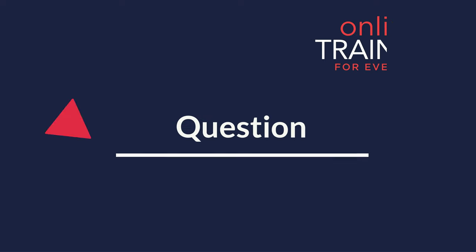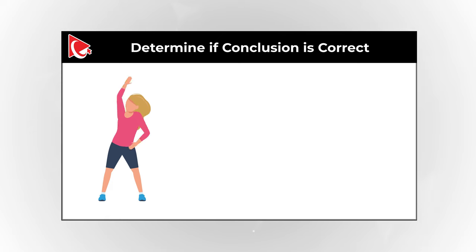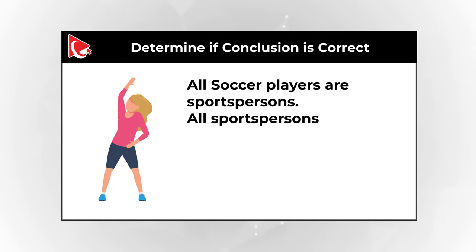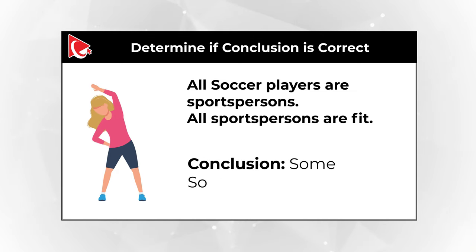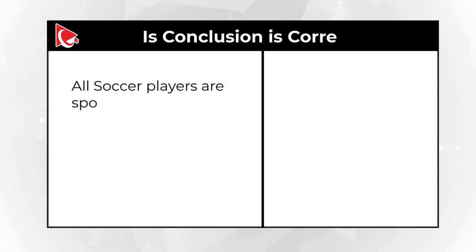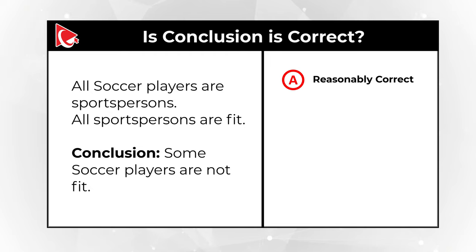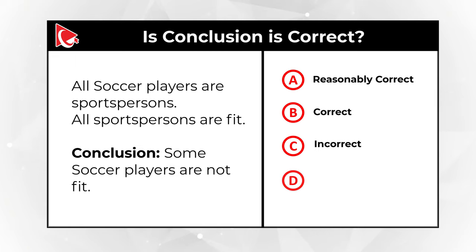Here is the frequently used question to test how logical you are. You need to determine if a conclusion is correct based on the statements. Statements: all soccer players are sportspersons, and all sportspersons are fit. Conclusion: some soccer players are not fit. Choices: A: reasonably correct, B: correct, C: incorrect, D: cannot be determined based on available information.